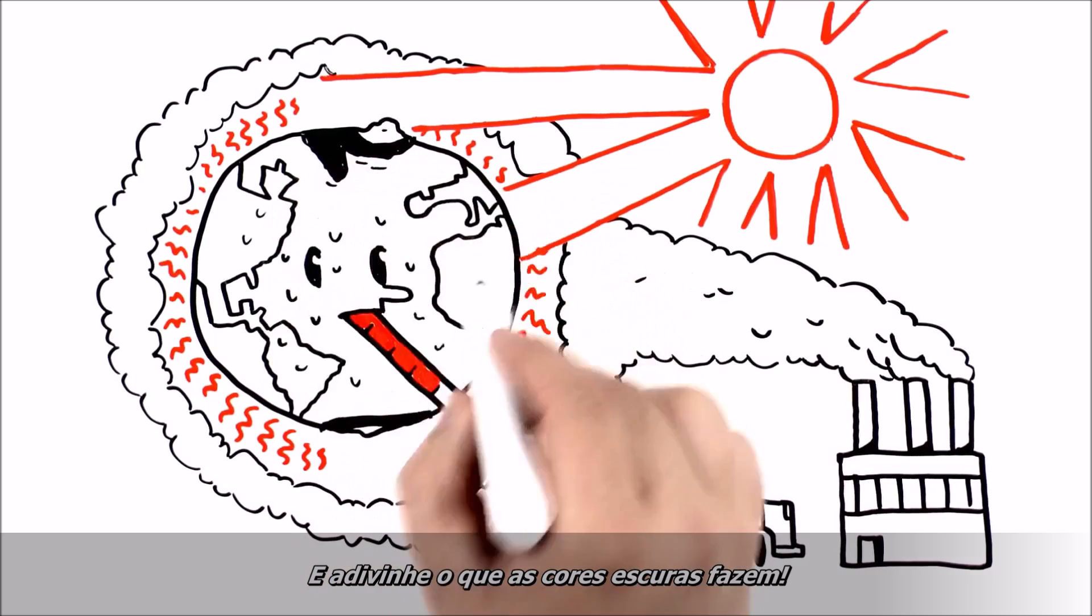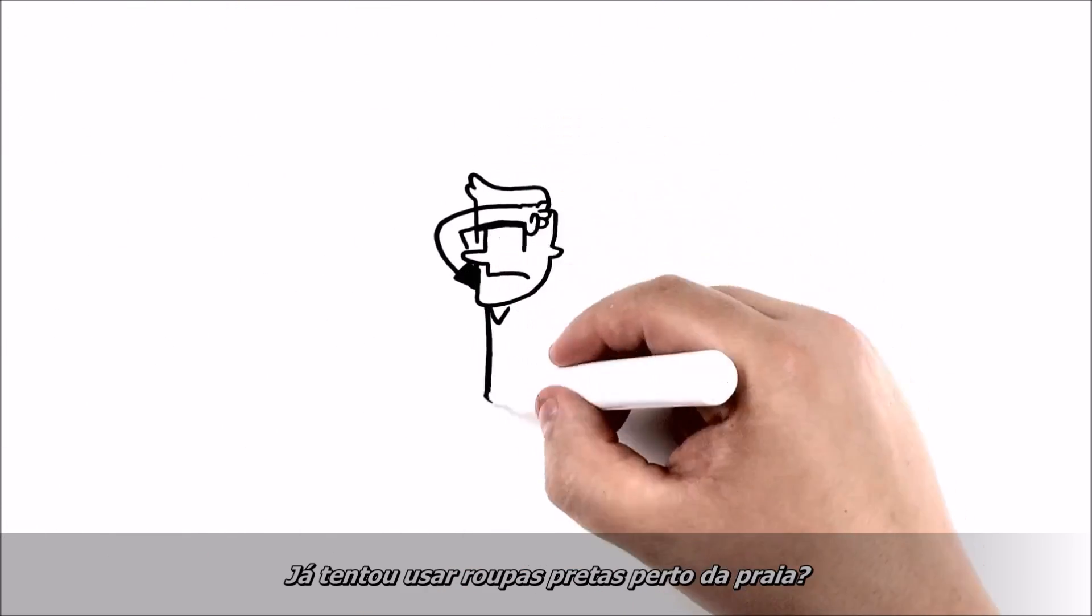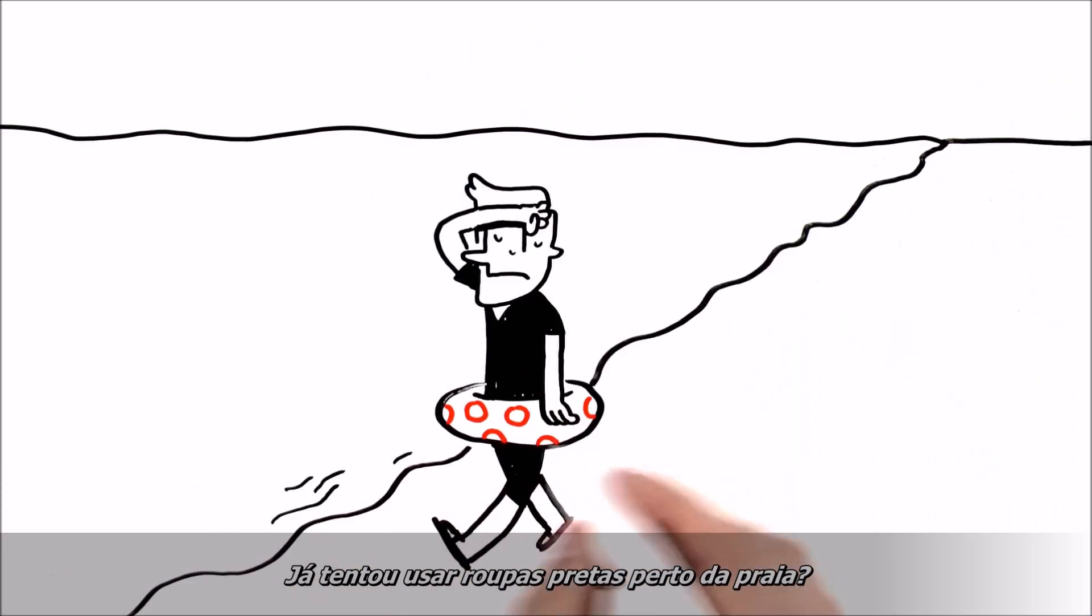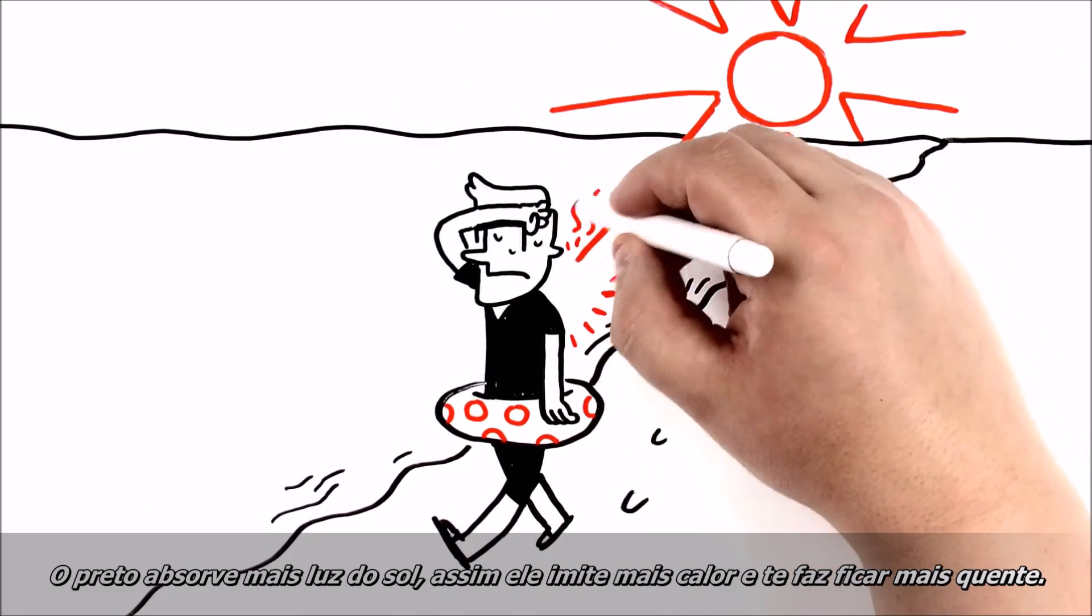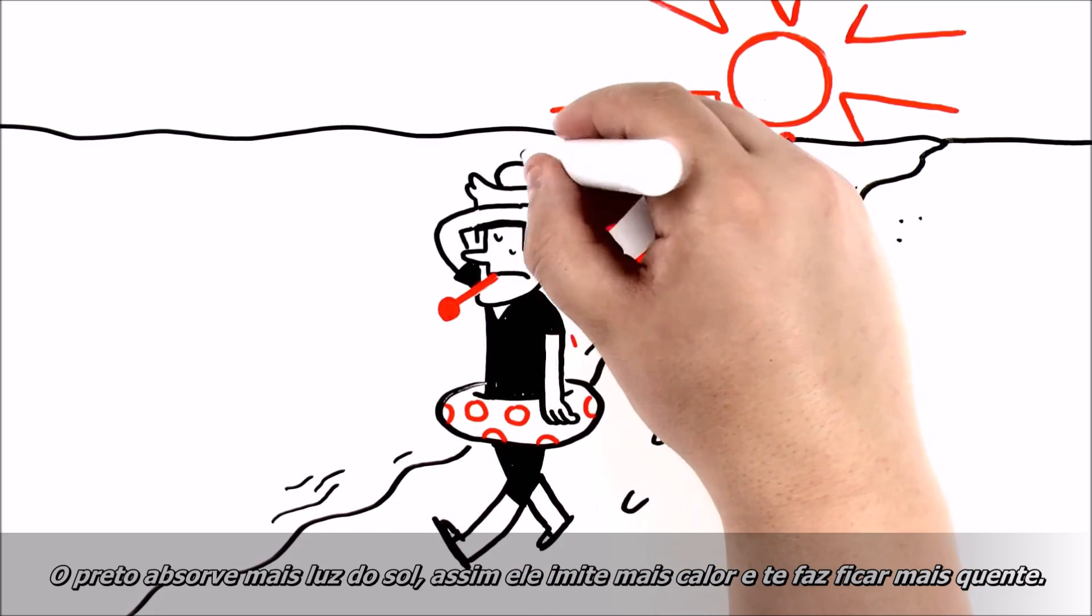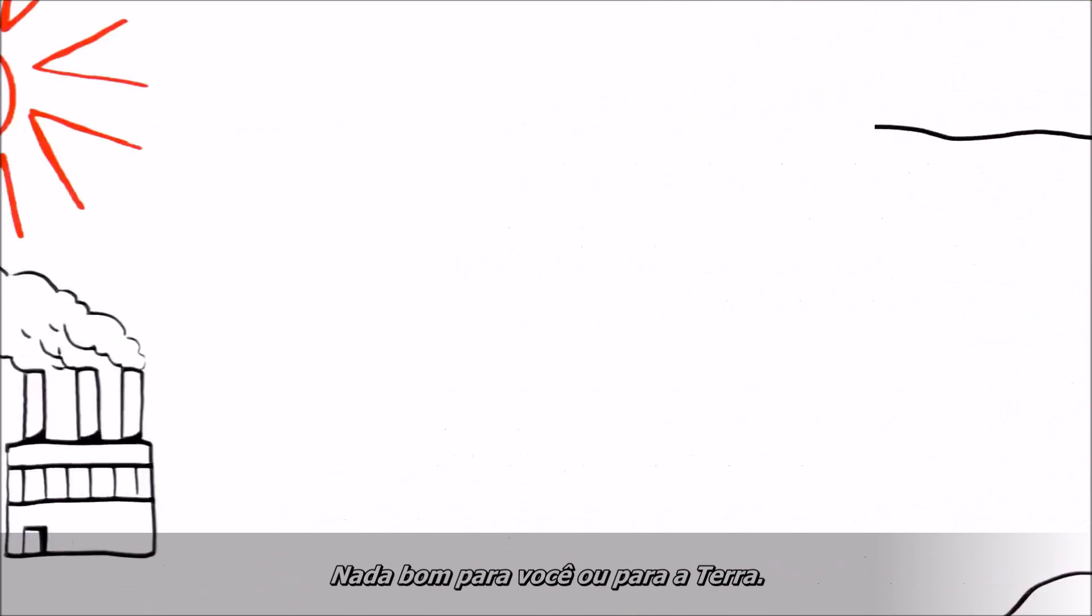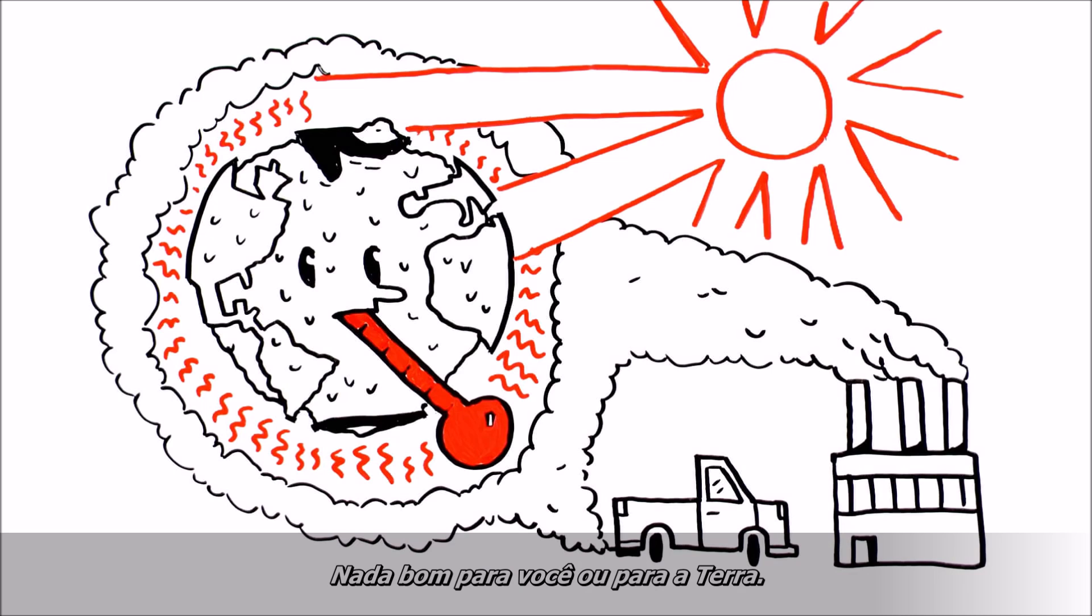And guess what dark colors do? Here's a hint. Ever try wearing black clothes to the beach? Not a good idea. Black absorbs more sunlight, thus emits more heat and makes you warmer. Not good for you or the Earth.